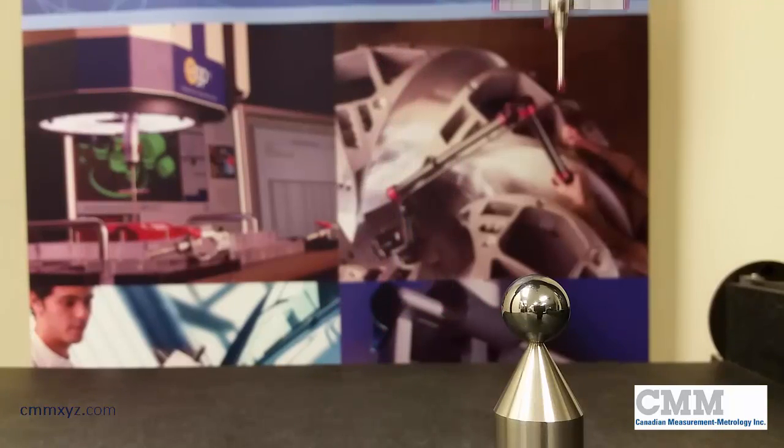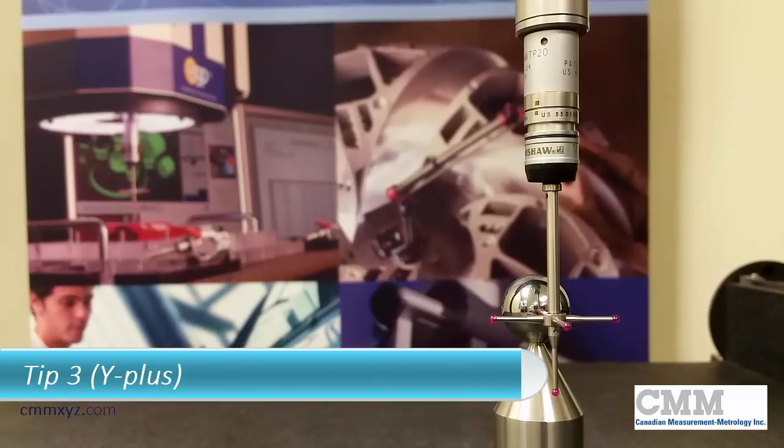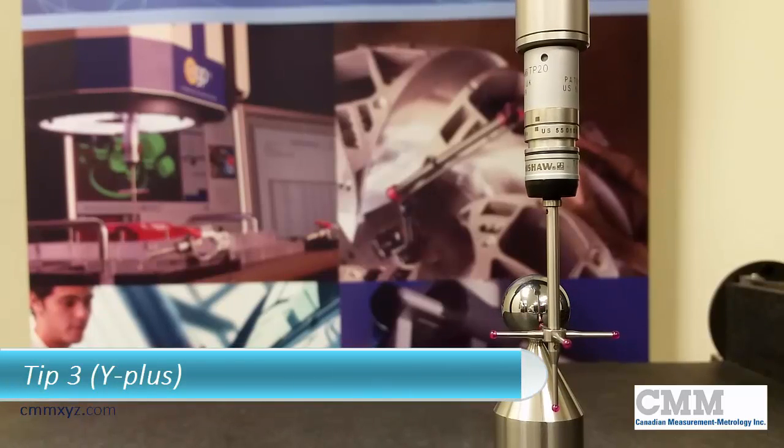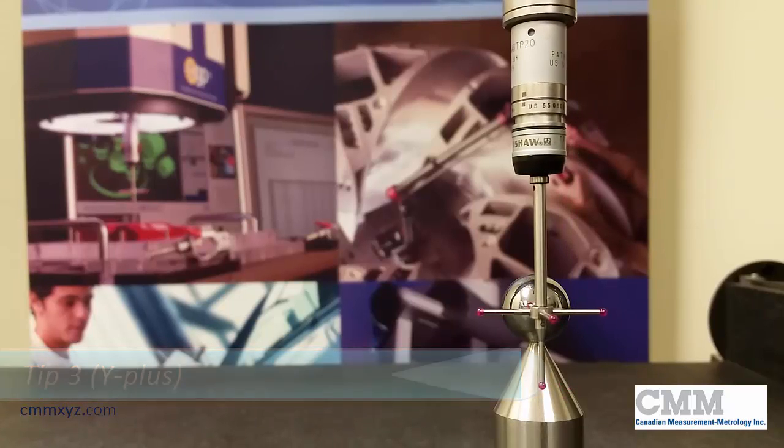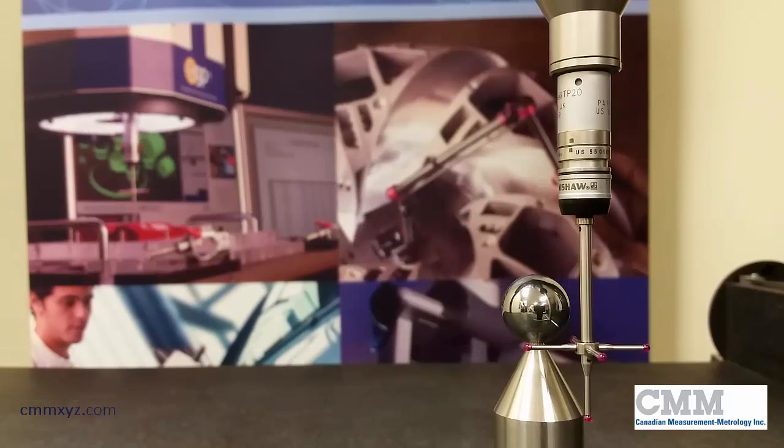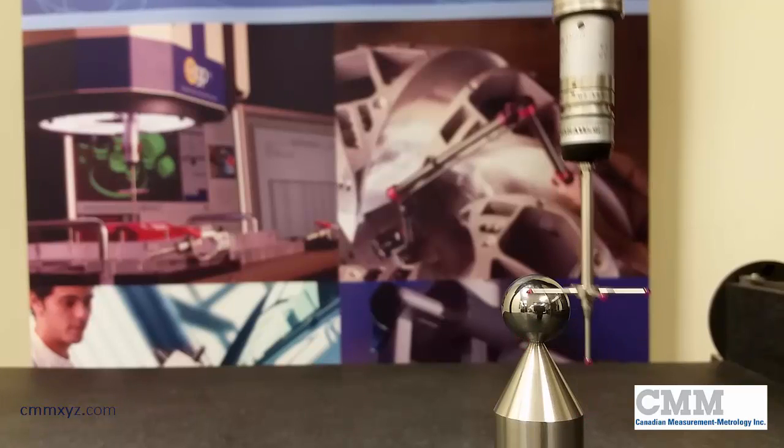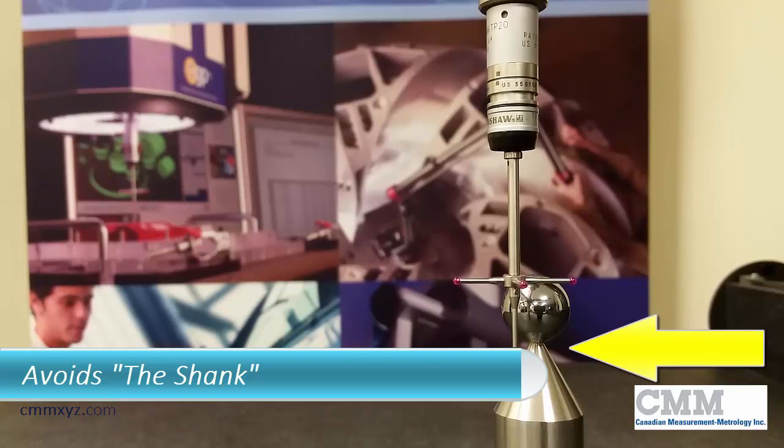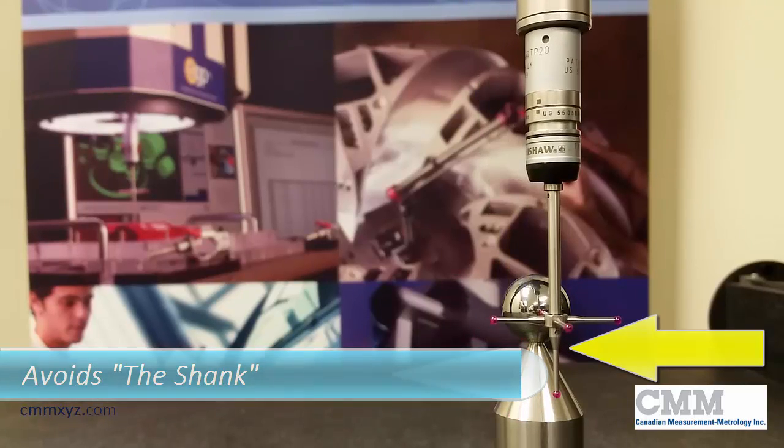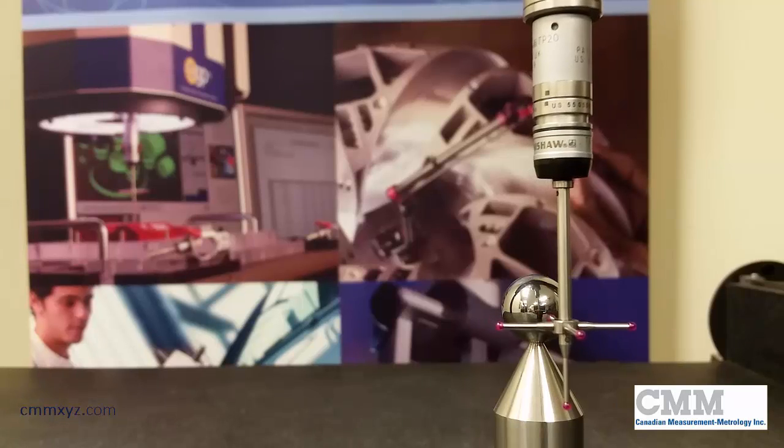It does its clearance moves. Goes to tip three and this is the one pointing to the back of the machine. Based on that orientation it will go to the equator. Notice how it avoids the shank. We've told the software that the shank is pointing straight up so it won't crash into it.